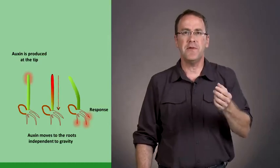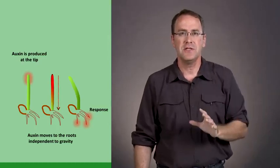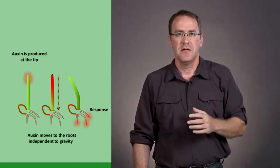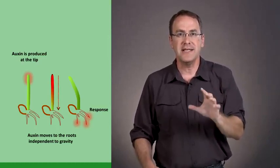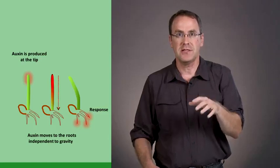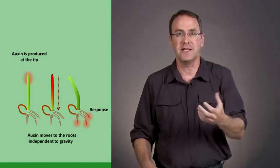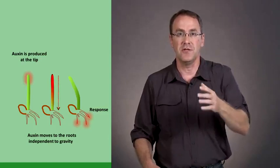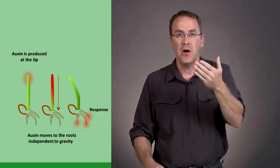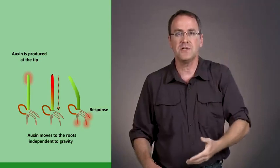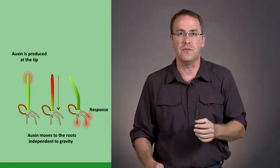How does auxin move from the tip of the plant down the stem to the roots? To understand this question, we're going to deal with the role of auxin in inducing roots. One of the main roles of auxin is that it induces root development. Auxin that is synthesized in the shoots moves down the stem into the roots and causes new roots to be formed.